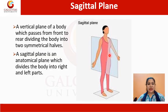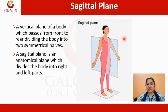The sagittal plane is a vertical plane of the body which passes from the front to rear, dividing the body into two symmetrical halves — one is the right and the other is the left — passing in between the midline.